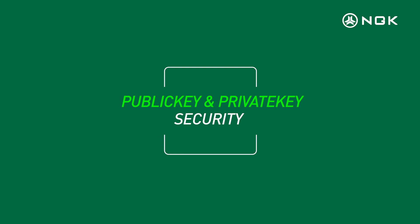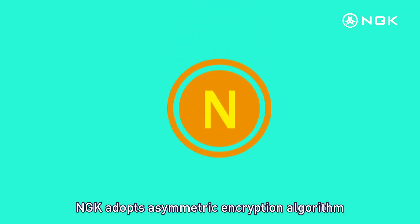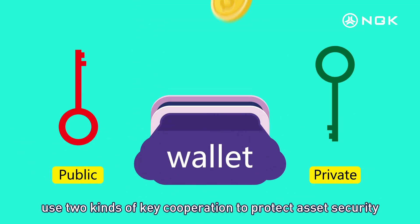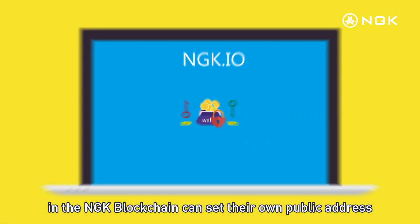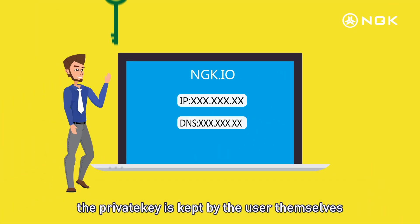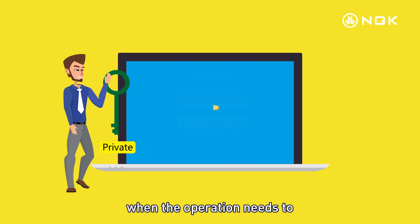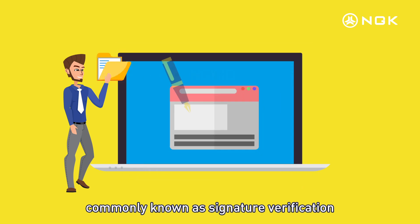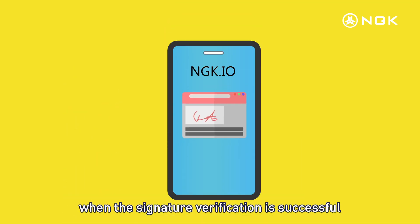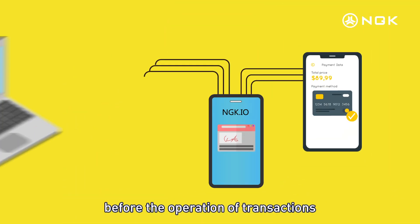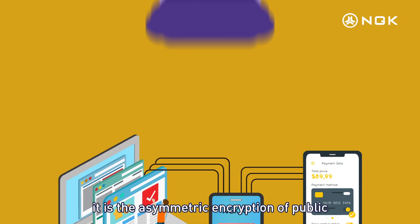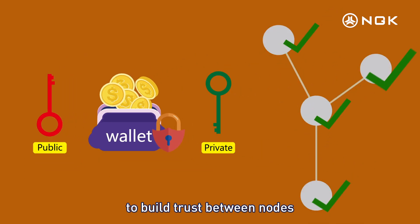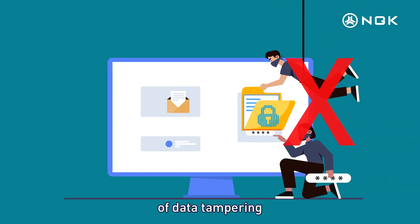Public Key and Private Key Security. NGK adopts an asymmetric encryption algorithm to generate public and private keys, using two kinds of key cooperation to protect asset security, and the NGK blockchain allows users to set their own public address. The private key is kept by the user, and when an operation requires public key encrypted data, the private key must be used to decrypt it, commonly known as signature verification. Successful signature verification is required before transactions can be executed, playing a key role in digital asset management. This asymmetric encryption of public and private key pairs builds trust between nodes and effectively prevents data tampering.